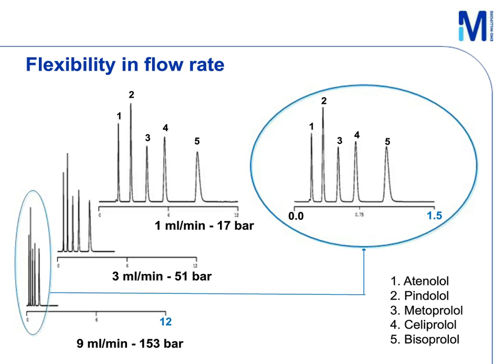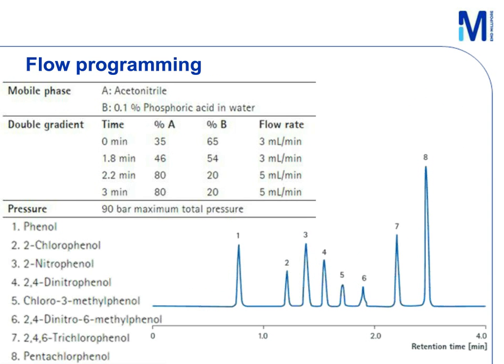Because monolithic columns respond very quickly to changes in flow rate, we have more flexibility in flow programming. Rates can be adjusted mid-flow to enhance peak definition of the target compound or to shorten total separation time once the compound has eluted. This enables clearer separation of two closely eluting peaks without significantly affecting total run time. For example, we increase the flow rate at 2.2 minutes in the program from 3 mL per minute to 5 mL per minute to achieve separation of all 8 analytes in 4 minutes.